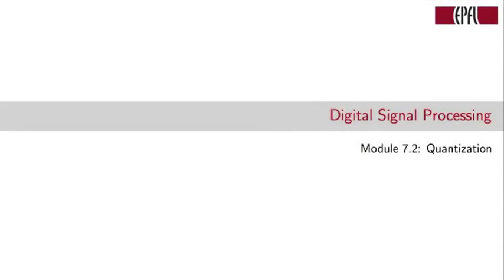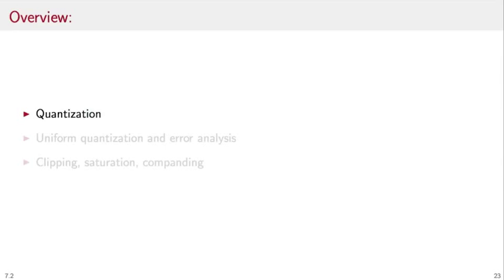Welcome to module 7.2 of digital signal processing in which we will talk about quantization. We will examine quantization in general terms and then concentrate on uniform quantization and the associated error analysis, and then we will briefly talk about clipping, saturation and companding.